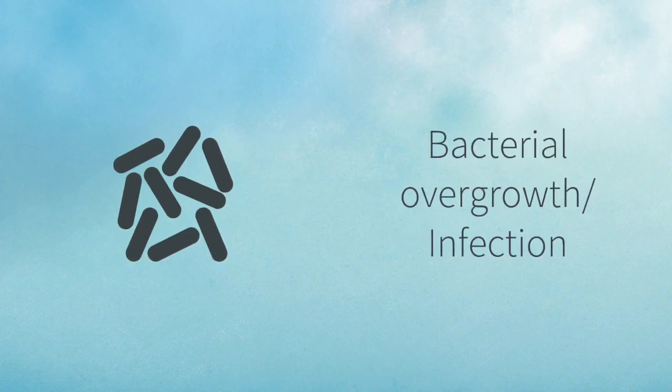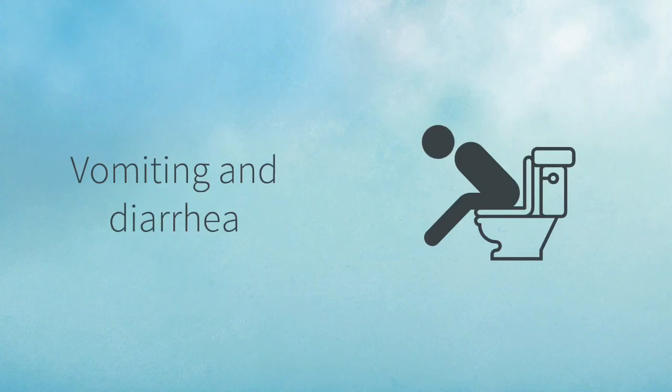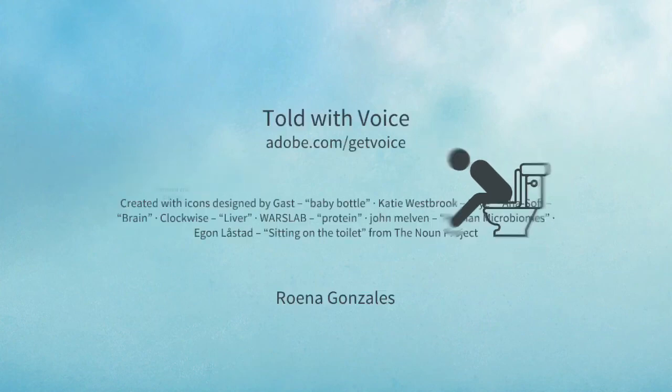Hence, there is bacterial overgrowth or infection. Vomiting and diarrhea are due to bacterial gas formation in the intestines.